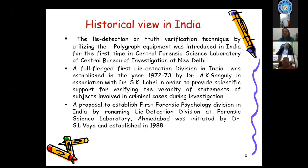Lie detection and truth verification technique in India started at CFSL, CBI, New Delhi. The first full-fledged lie detection division in India was established in 1972-73 by Dr. Ganguli and Dr. Lahiri to provide scientific support for verifying the veracity of statements of subjects involved in criminal cases. The first forensic psychology division in India was then established by renaming the lie detection division at the Forensic Science Laboratory, Ahmedabad, initiated by Dr. Selvi and established in 1988.